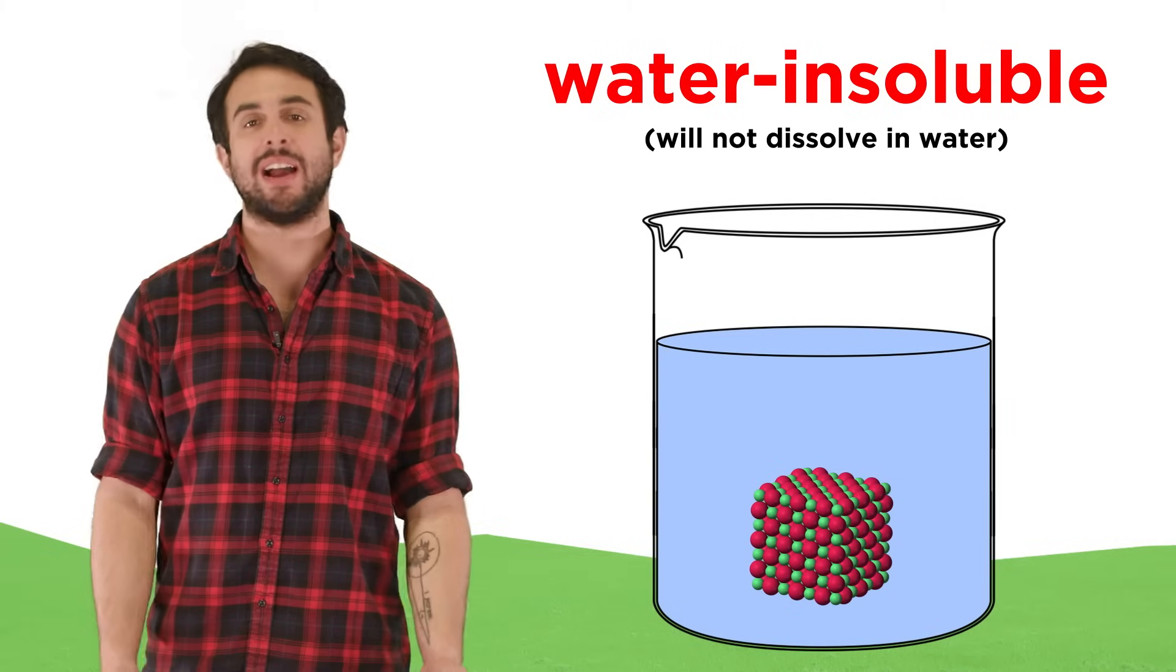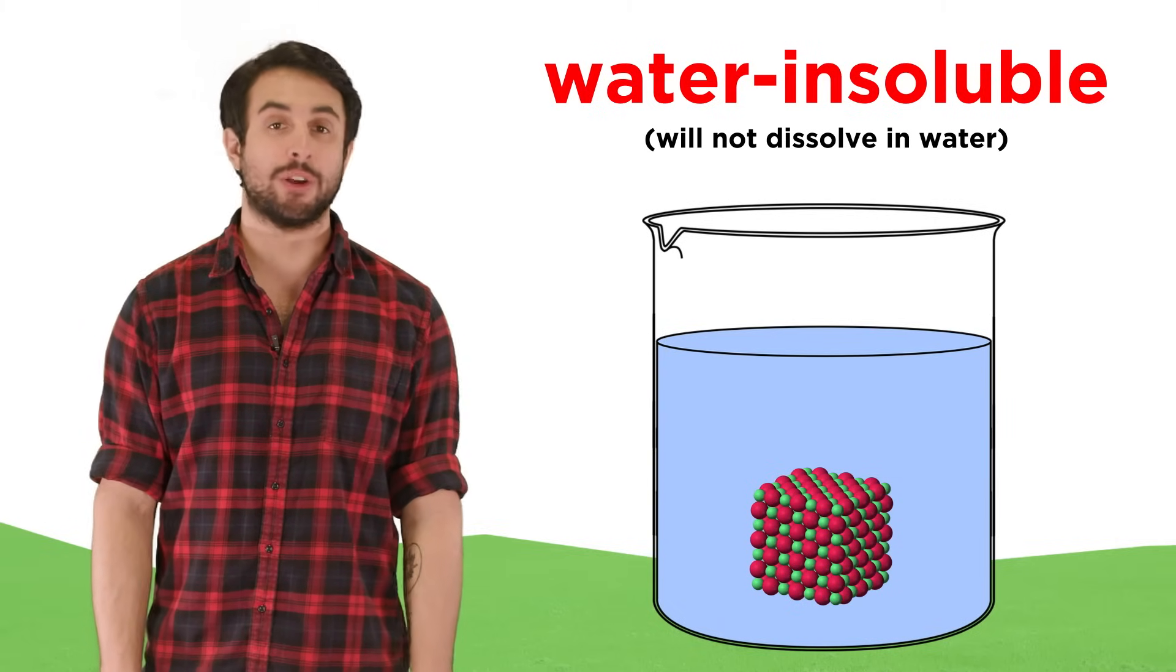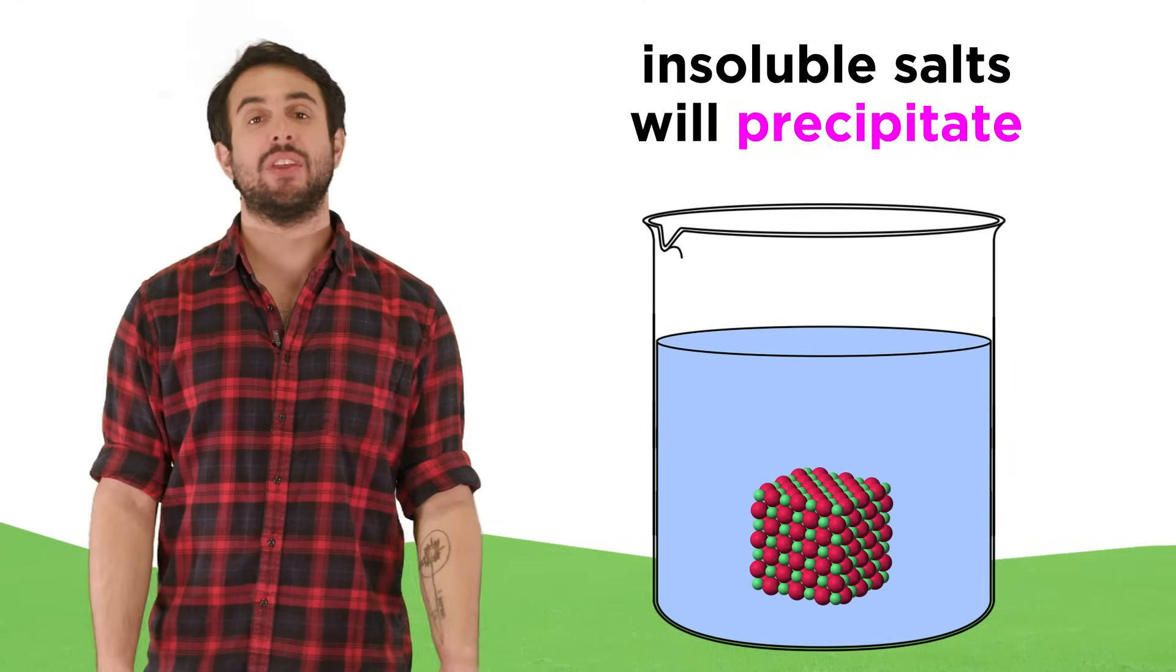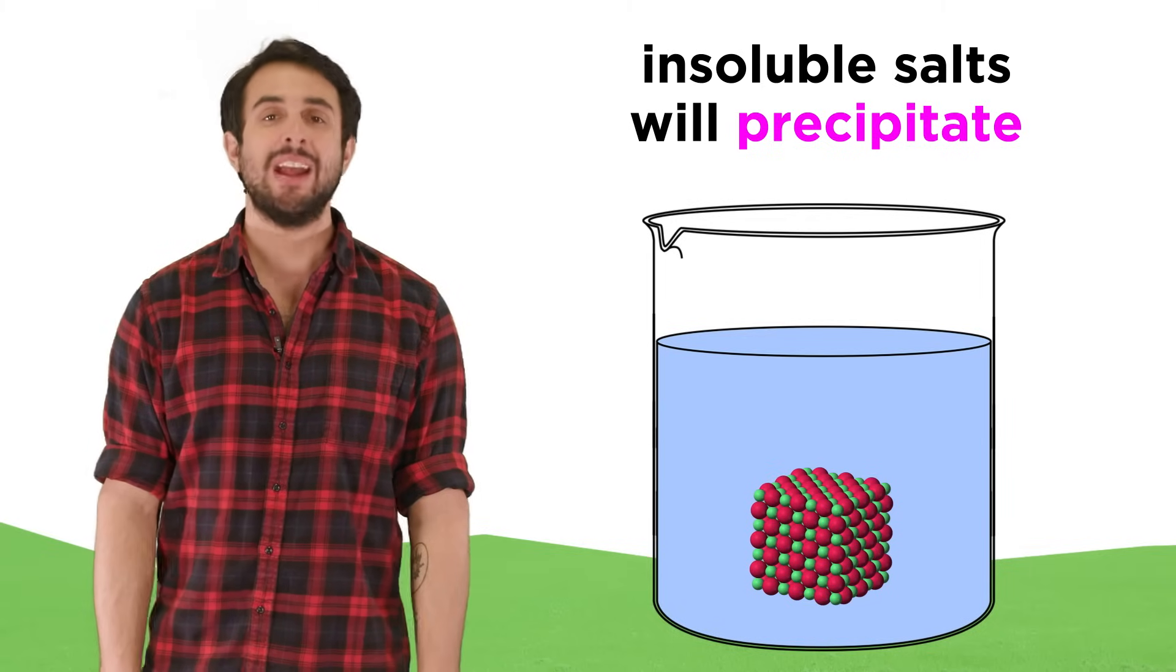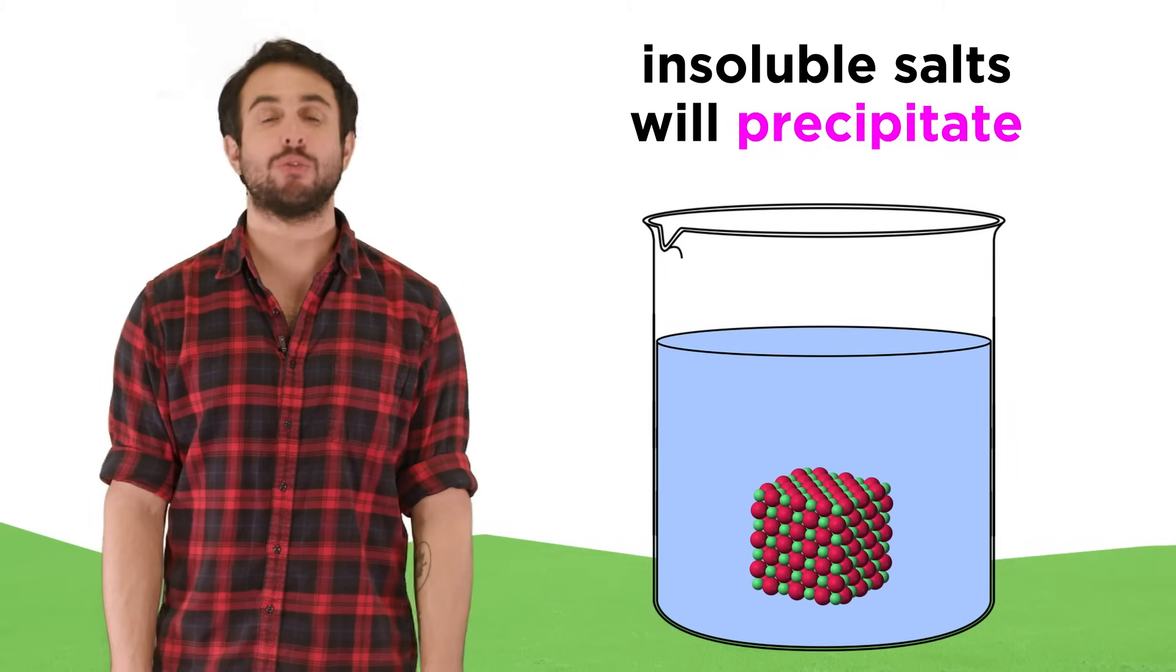We also learned that other ionic compounds are water insoluble and will not dissolve at all, remaining completely in the solid phase. Beyond this, if the components of such a compound find each other in solution, they will precipitate and leave solution completely to form a solid.